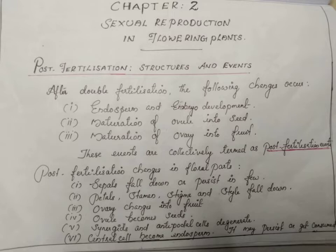After double fertilization, the following changes occur: endosperm and embryo development, then maturation of ovule into the seed, and maturation of ovary into the fruit. These are the three events that take place after double fertilization. The first event is endosperm and embryo development.